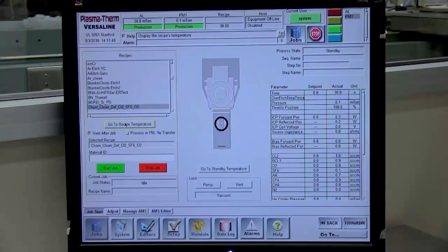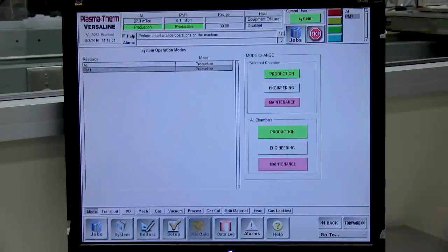Check that the system is in production mode, as displayed in the status bar at the top of the screen. If it is in maintenance mode, you will need to go to the maintain / mode screen and choose all chambers production.